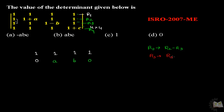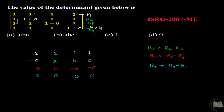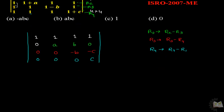R3 = R3 minus R4: 1 minus 1 = 0; 1 minus 1 = 0; 1 minus B minus 1 = minus B; 1 minus (1 plus C) = minus C. Then R4 = R4 minus R1: 1 minus 1 = 0; 1 minus 1 = 0; 1 minus 1 = 0; 1 + C minus 1 = C. You now have the determinant.